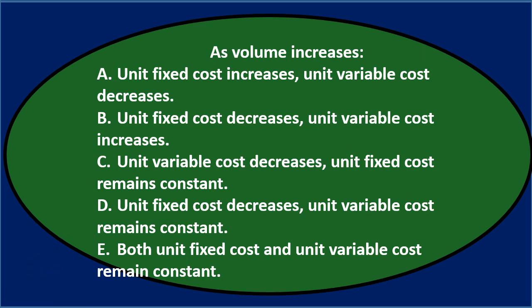Next question: As volume increases, A. unit fixed cost increases, unit variable cost decreases. B. unit fixed cost decreases, unit variable cost increases. C. unit variable cost decreases, unit fixed cost remains constant. D. unit fixed costs decrease, unit variable costs remain constant. Or E. both unit fixed cost and unit variable cost remain constant.